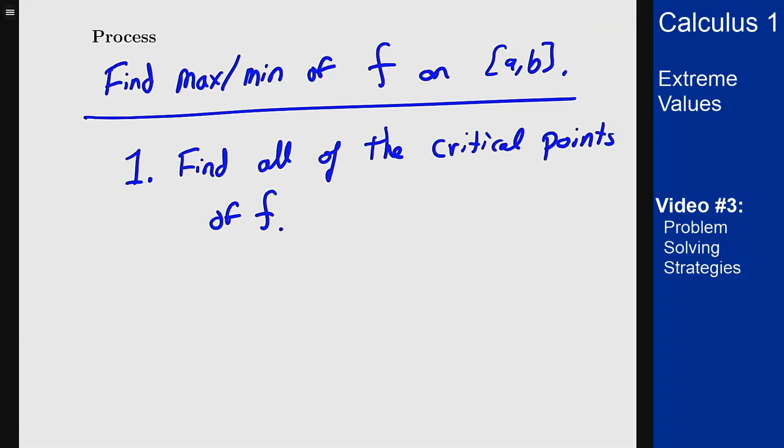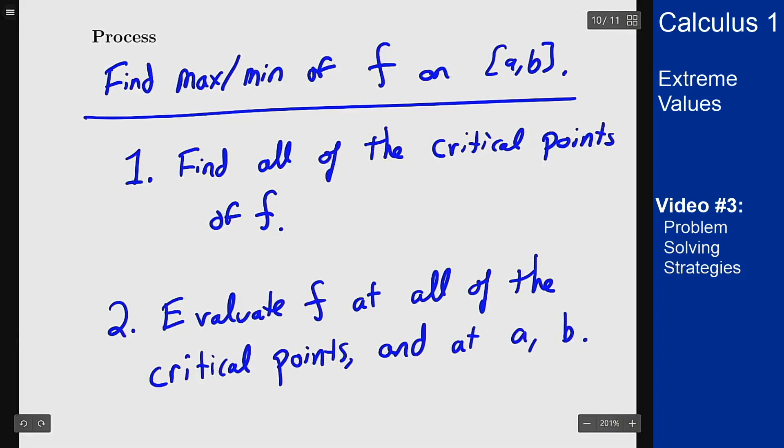We want to evaluate our function f at all the critical points and at the two endpoints a and b. I like to write this into a table that we'll see with the example in a second, just a list of all these values showing where they are and what the values of f are at each of these points.